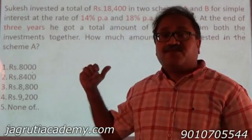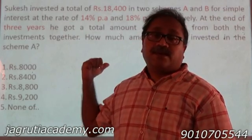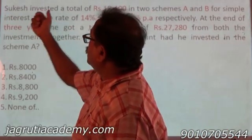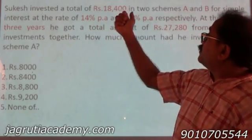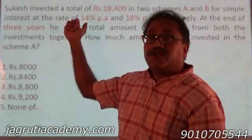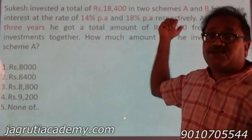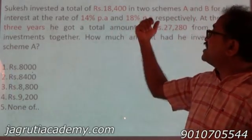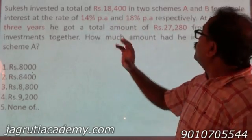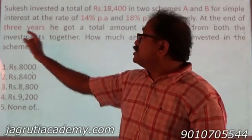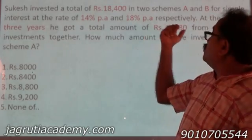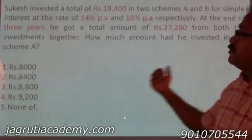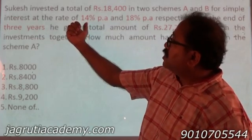Hello friends. This is a WhatsApp-posted question related to the simple interest chapter and it's an important question. Sukesh invested a total of Rs 18,400 in two schemes A and B at the rate of 14% per annum and 18% per annum respectively. At the end of 3 years he got a total amount of Rs 27,280 from both investments together. How much amount was invested in scheme A at 14% per annum?